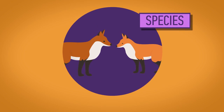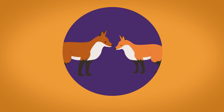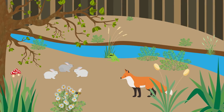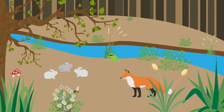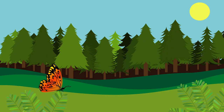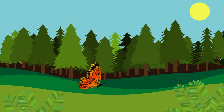A species is a group of potentially interbreeding individuals, which do not normally reproduce with other species to produce viable fertile offspring. So here in our woodland, we have foxes and rabbits that are clearly different species. But we may also have a few different species of butterfly.